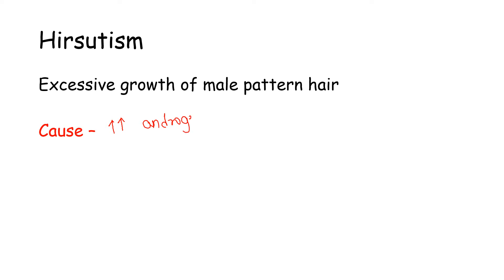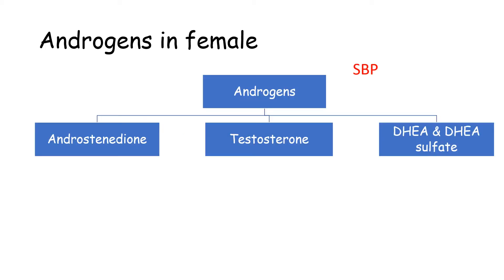Apart from female sex hormones, androgens are generally seen in the female body but in very small amounts, and they are of four types: androstenedione, testosterone, dehydroepiandrosterone (DHEA) acetate, and DHEA sulfate.